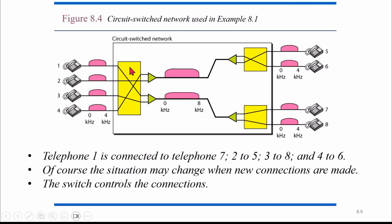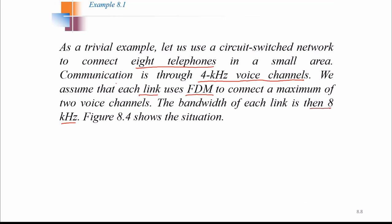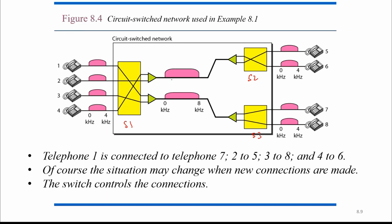For a circuit switched network, a switch is required. There is one switch at the input side, then another switch, and another — so three switches in total. Switch one takes four inputs and has four outputs. Because each link uses FDM to connect a maximum of two devices, each link can accept two voice signals at a time. One voice signal is four kilohertz, so each link will have eight kilohertz bandwidth.